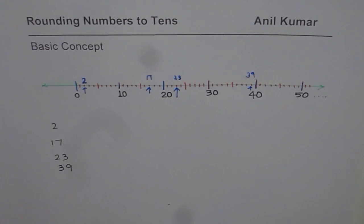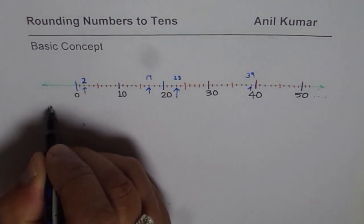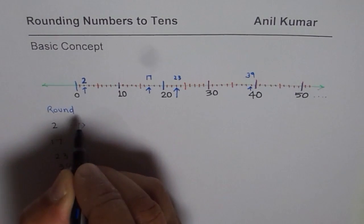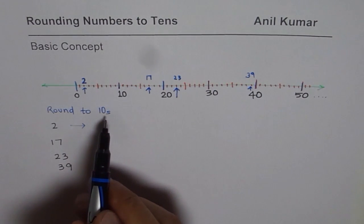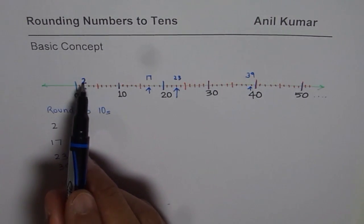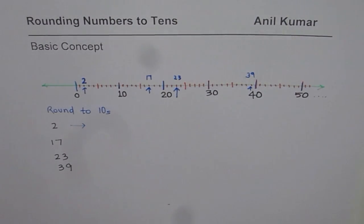We need to round these numbers to nearest tens, right? So let us round them to nearest tens. So we will write tens. Rounding to tens means to write these numbers as 0, 10, 20, 30, 40, 50 and so on. How do we do it?